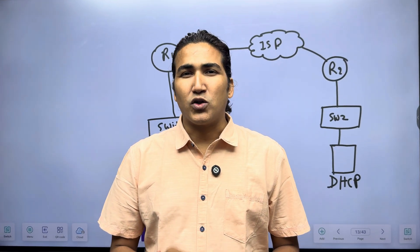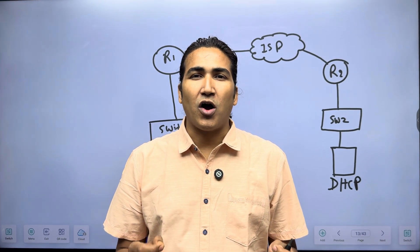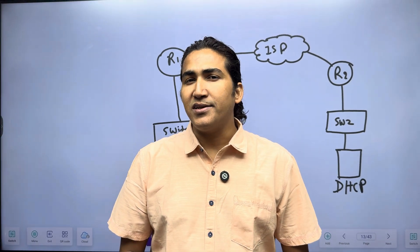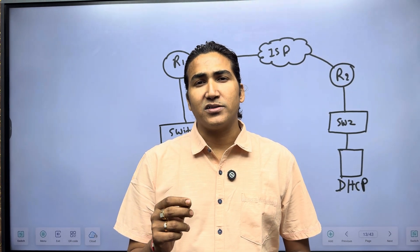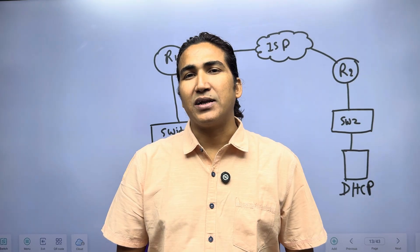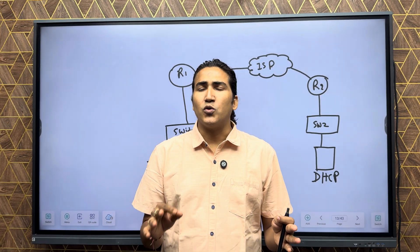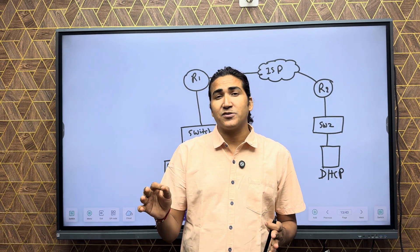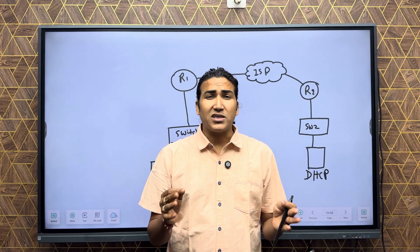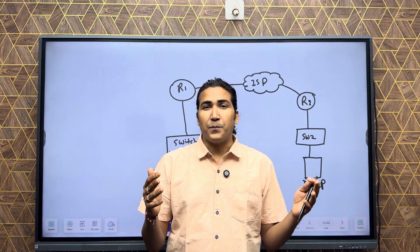DHCP works on the DORA process: Discover, Offer, Request, and Acknowledgement. A client machine discovers the DHCP server with the help of a Discover message. All client machines that need an IP address from a DHCP server always generate a Discover message, and the Discover message is a broadcast.